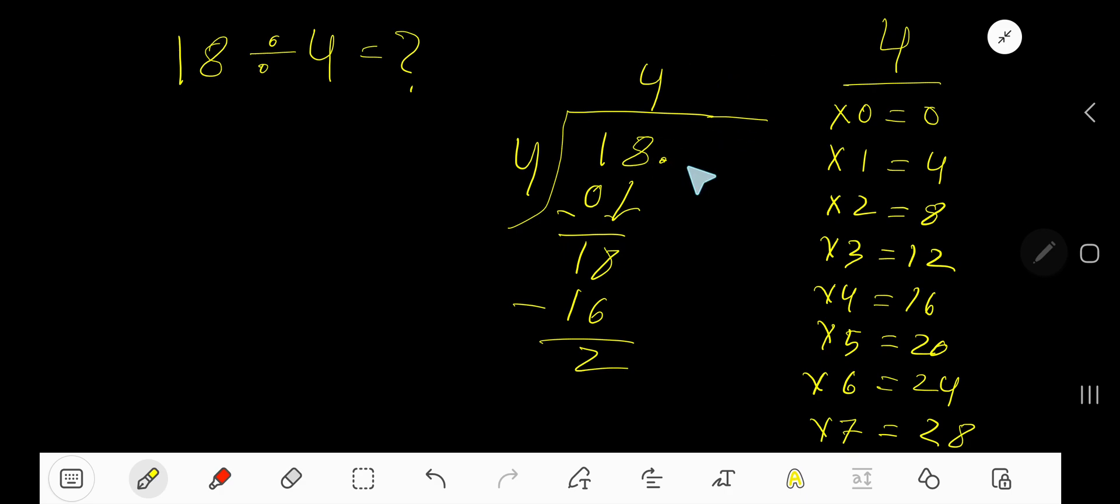If you want to write your answer in decimal form, then take a decimal and add number of zeros. Bring down the first zero, but before the zero there is a decimal. Decimal must come to the quotient directly.